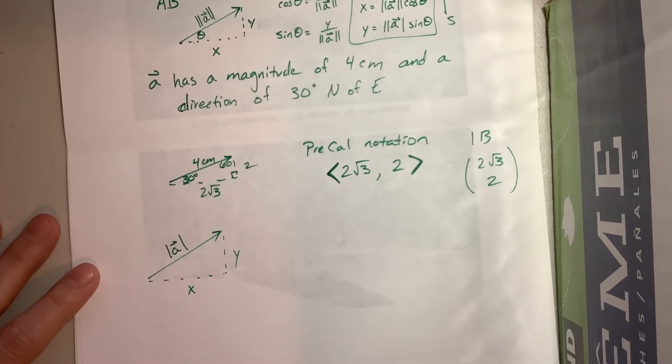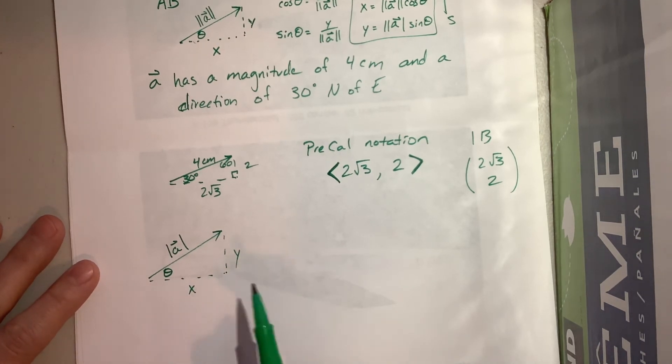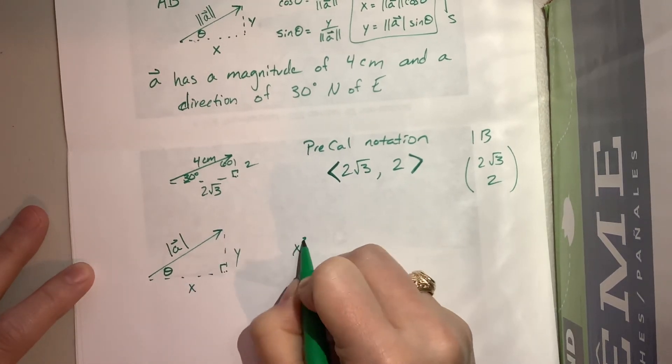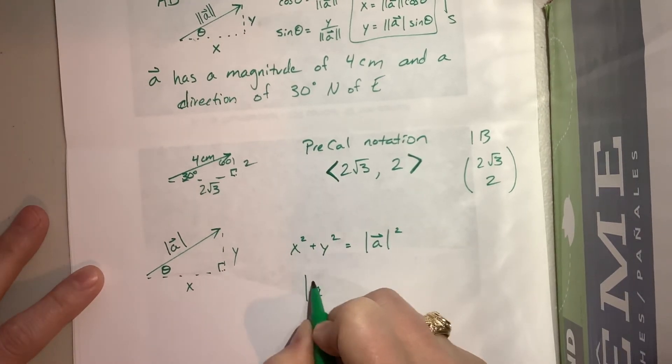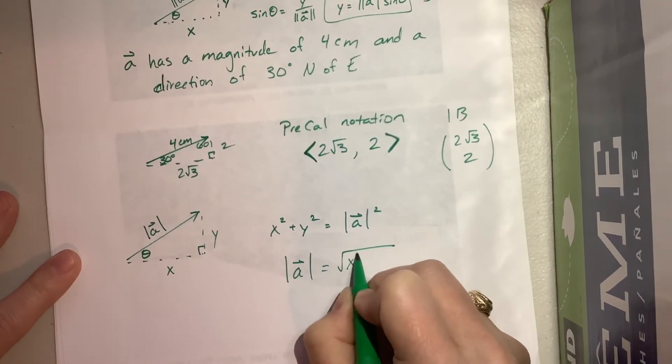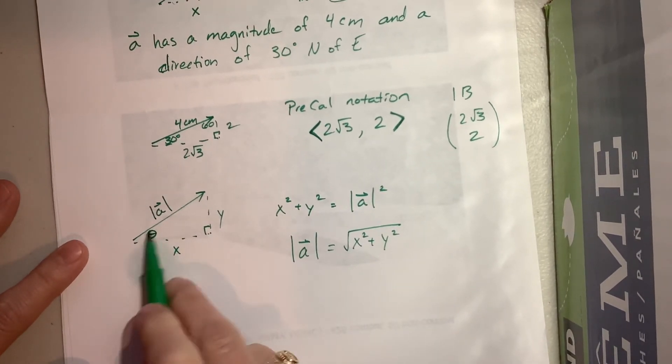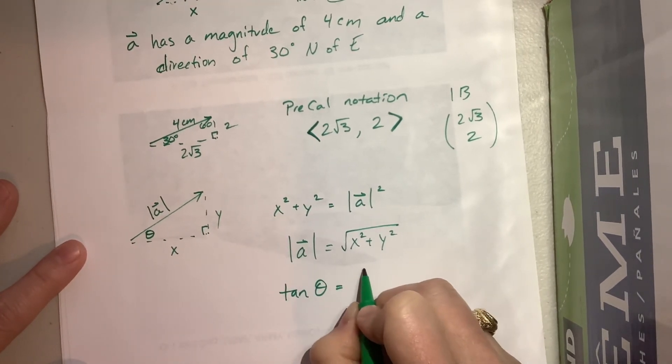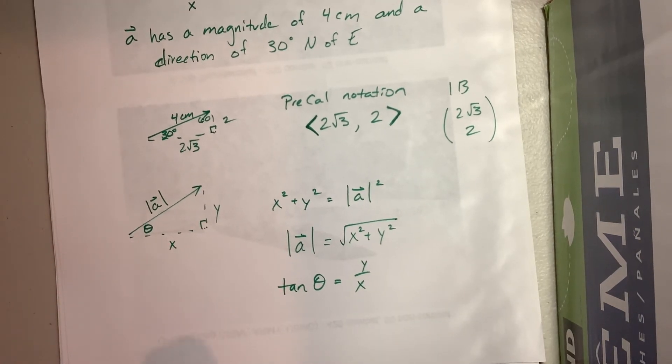Then what we know is we know that x squared plus y squared is going to equal the magnitude of a squared. So if I want to find the magnitude of that vector what I can do is I can take the square root of x squared plus y squared because that's just Pythagorean theorem. Likewise if I want to find that angle, well this is opposite over adjacent, so tangent of theta is equal to y over x.